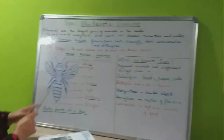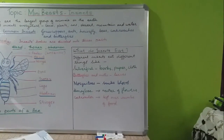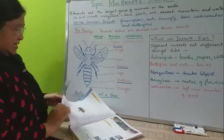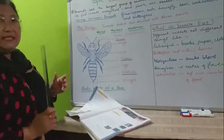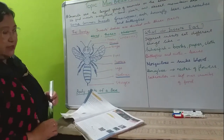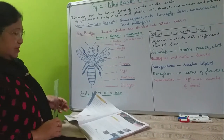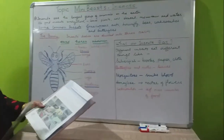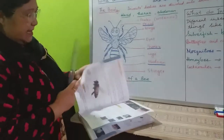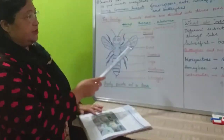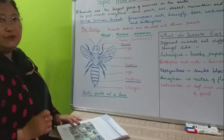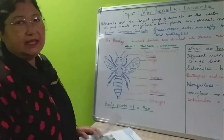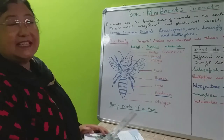So children, this is all about the body of insects and what they eat. In the next class I'll teach you about useful insects and harmful insects. All of you read the book from pages 21 and 22, and draw the diagram — notes we'll do later in the next classes. Have a nice day, thank you!